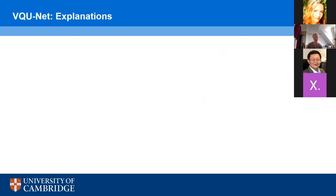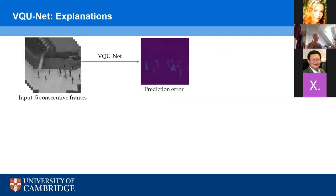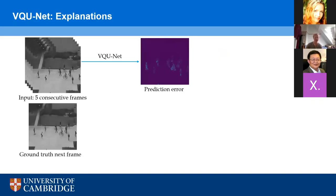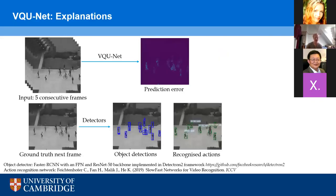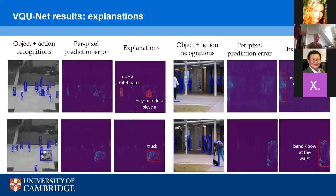I will now show you how we can also use this network for explanations. We take the input of five consecutive frames and pass them through the VQ-UNET to form the per-pixel prediction error saliency map. We then take the ground truth next frame and pass it through state-of-the-art object detection and action recognition networks, which output a set of bounding boxes and corresponding labels — for example a bicycle, a person, a handbag, walking, running, etc. We then sum the per-pixel prediction error within each bounding box and threshold them to obtain a set of anomalous bounding boxes, and the labels associated with those bounding boxes can then be used as anomaly explanations. Here are some examples of correctly detected and explained anomalies: people riding a bicycle on the pavement, a truck driving on the pavement, someone practicing martial arts, or someone bending or bowing at the waist.